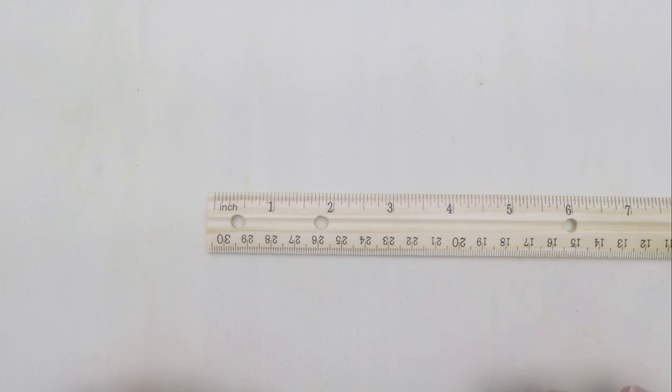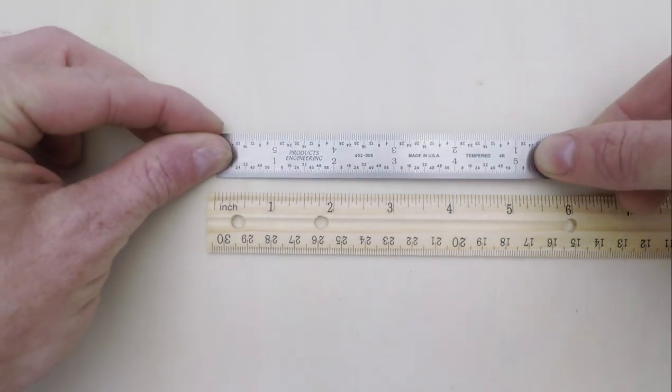If you're building something, however, especially something small with lots of parts, you're probably going to need to be more precise. That's where the steel rule comes in.